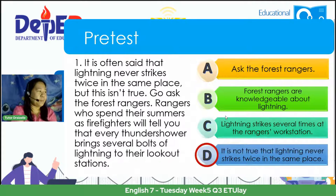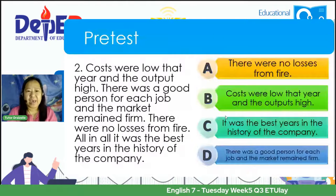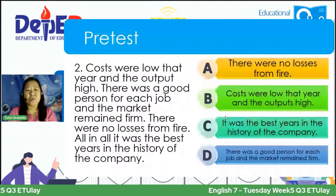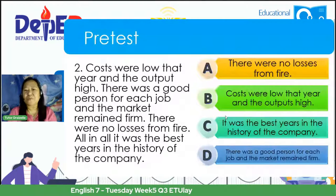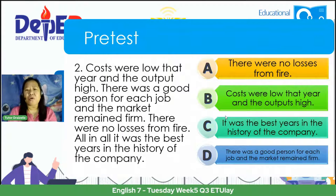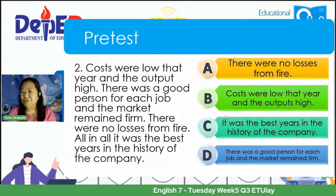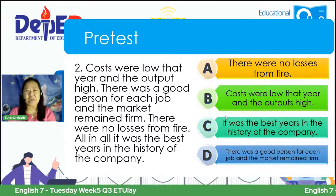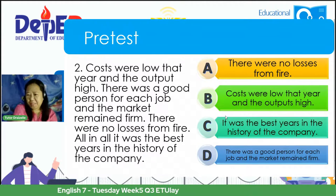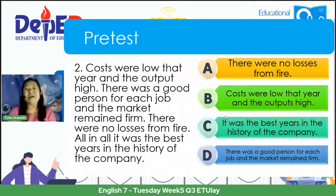For number two: 'Costs were low that year and the output was high. There was a good person for each job and the market remained firm. There were no losses from fire. All in all, it was the best year in the history of the company.' Choices: A. There were no losses from fire. B. Costs were low that year and the output was high. C. It was the best year in the history of the company. D. There was a good person for each job and the market remained firm. The correct answer is D.